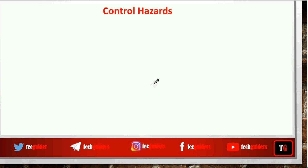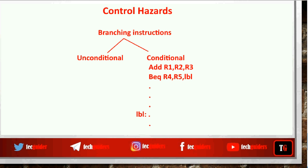In the executed program, non-sequential flow is controlled with the help of branching instructions. Branching instructions can be either unconditional or conditional. An unconditional branch always makes a jump to a target instruction without checking any condition, while a conditional branch checks a condition and jumps only if it is true.